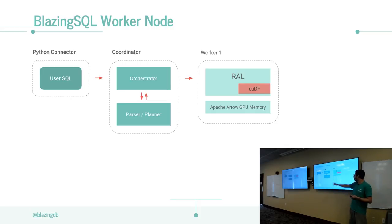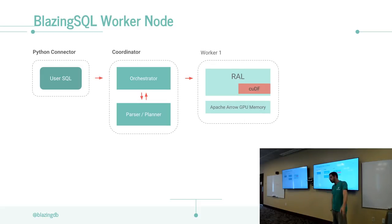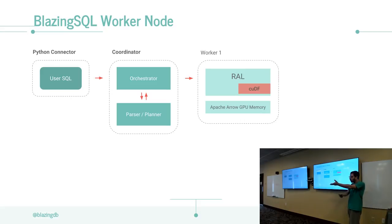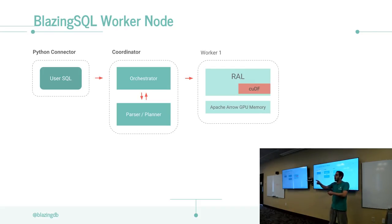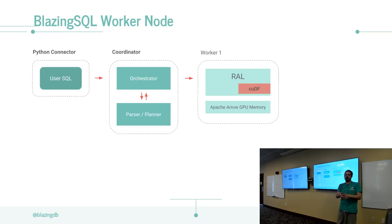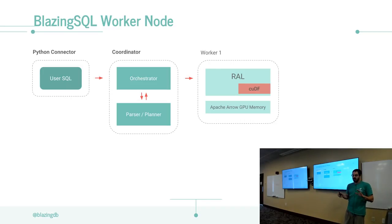The worker has the Apache Arrow GPU memory representation - the same one all the Rapids AI ecosystem projects use. So you can actually shuttle information around: receive inputs, run queries on information output from a machine learning library, because we're all speaking the exact same language. Whenever we're on the same nodes we use zero-copy IPC - there's no copy. You give the consuming process access to that region of memory, so you can write and read from it but can't free it. This greatly reduces the need to move information around.